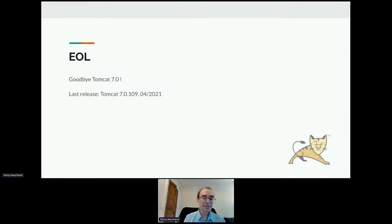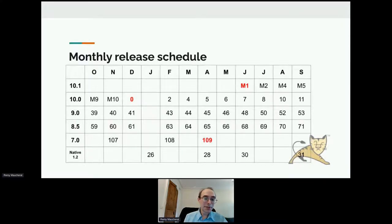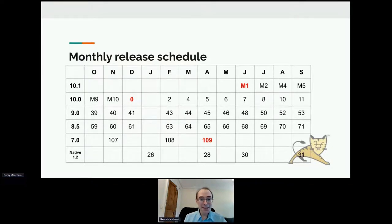This year we said goodbye to Tomcat 7.0. The last release was in April — it was 7.0.109, so quite a number of releases, well over 100. That was our monthly release schedule for this year. We tried to adhere to a monthly schedule and we've been very successful, except in January where we found some bugs that needed fixing and the release slipped for a few weeks.